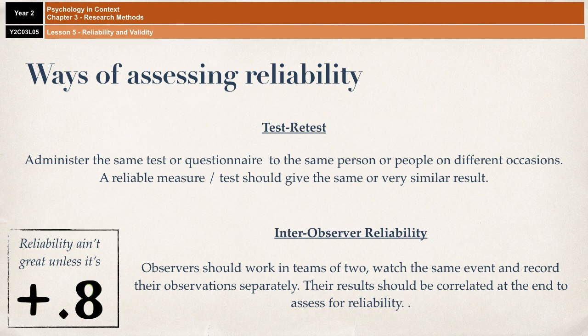So that is inter-observer reliability, and again the rule of positive 0.8 is applied. It's also worth mentioning that similar methods would apply to other forms of observations — so in content analysis, for example, instead of being called inter-observer reliability it would be called inter-rater reliability. You can also use it in interviews, where it's known as inter-interviewer reliability, but it works in exactly the same way.